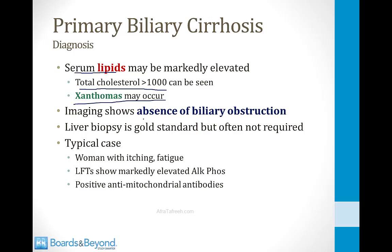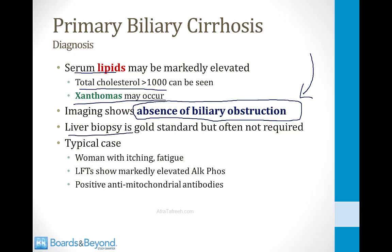When you order imaging, you will see an absence of biliary obstruction. Usually when people present with increased alkaline phosphatase, one of the first tests is a right upper quadrant ultrasound. You will see completely normal bile ducts in a patient with primary biliary cirrhosis, and that helps cinch the diagnosis. A liver biopsy is the gold standard but often not required. A typical case is a woman with severe itching and fatigue, markedly elevated alkaline phosphatase, and positive antimitochondrial antibodies.